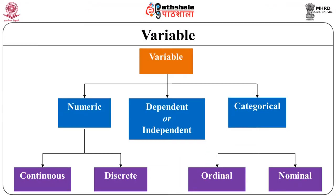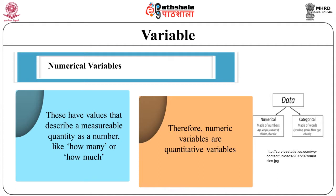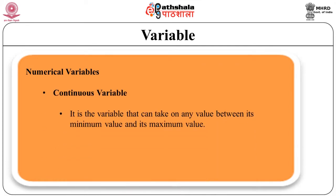Another type is variables. A variable is a characteristic that can take on different values for different members of the group under study. For example, a group of university students will differ in gender, height, attributes, intelligence and many ways. These characteristics are called variables because the value may vary between data units in a population and may change over time. Variables are categorized into different types based on their scale. Numerical variables have values that describe a measurable quantity as a number, therefore numeric variables are quantitative variables, further divided into continuous and discrete variables.